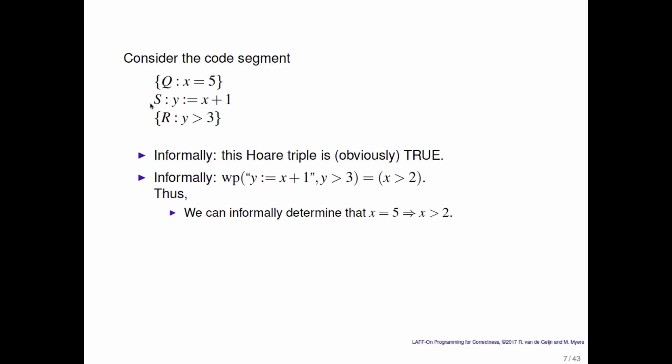And notice that then you can informally determine that x is equal to 5 implies that x is greater than 2. That's one of those duh things. Or you can formally prove this through, for example, an equivalence proof.